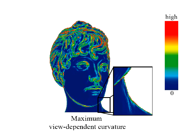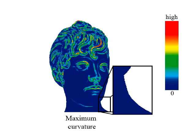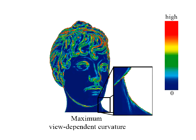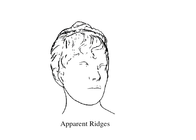Here we see curvature and view-dependent curvature color-coded onto the object. The warmer the color, the higher the value. On front-facing parts of the image, the two values are similar. When the object turns away from the viewer, the view-dependent curvature gets much larger.